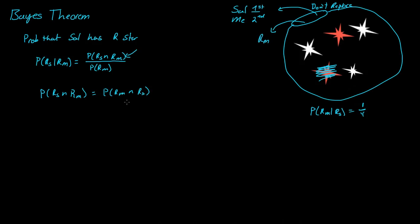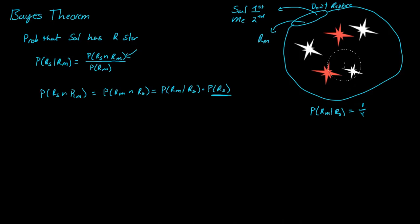Well, this is equal to the probability of me getting a red star given that Sal got a red star, times the probability that Sal got a red star. So we can actually solve for this. What's the probability of Sal getting a red star? Well, that's just two out of five. So that's two-fifths.